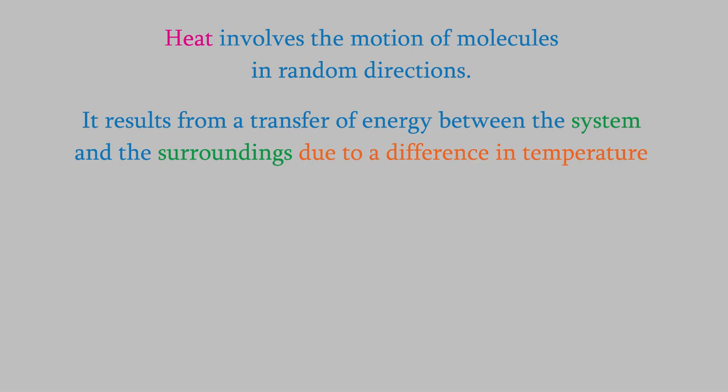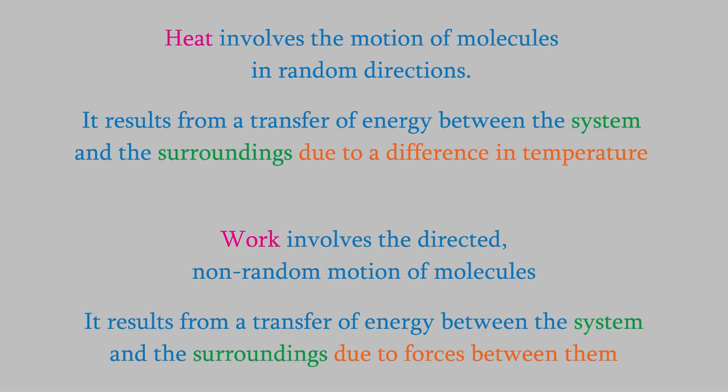The other type of motion is non-random directed motion, which is a characteristic of work. Work is defined as a transfer of energy resulting from forces between a system and its surroundings. Notice that both of these definitions refer to the system and the surroundings, so we need to define those two things very carefully, too.